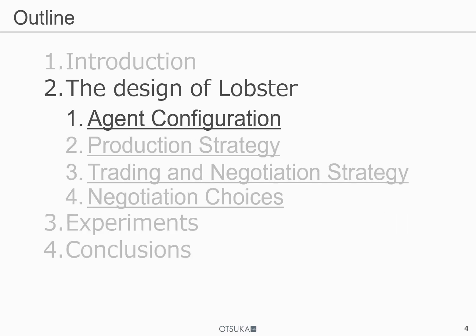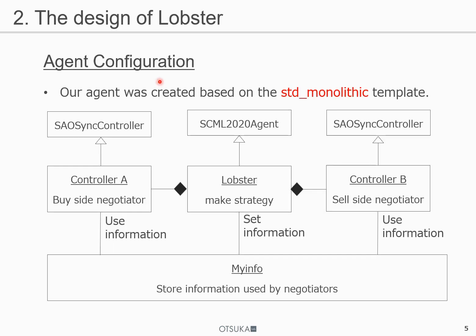Now, let's talk about our agent configuration. Our agent was built based on the standard monolithic template. The Robster class inherits the ANAC 2020 agent. This is the main class and is responsible for making strategy decisions.